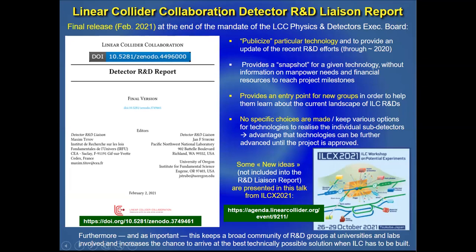I would like to refer you to the detector linear collider detector R&D liaison document, which was released in its final version last February at the end of the mandate of the LCC physics and detector executive board. It provides a concise summary and updates since the ILC TDR for different detector R&D technologies, not for the concepts. The idea is to summarize and publicize particular technologies and provide an update of regular R&D efforts in order to provide an entry point for new groups to learn about the current landscape — ongoing for more than 30 years. No specific choices or preference of one technology over another are addressed; it rather provides a landscape.